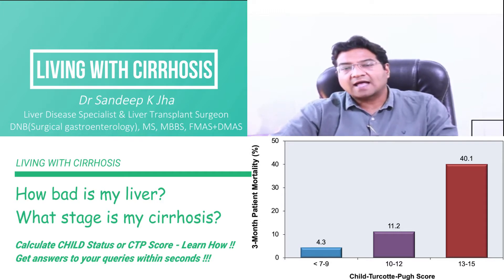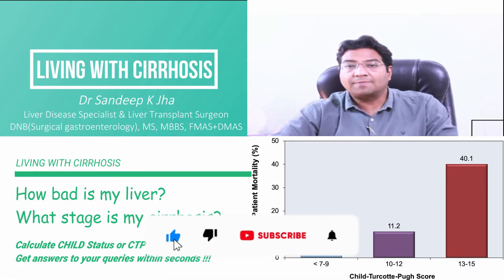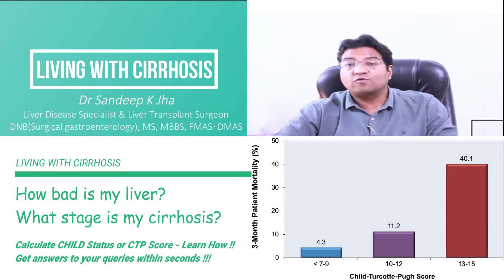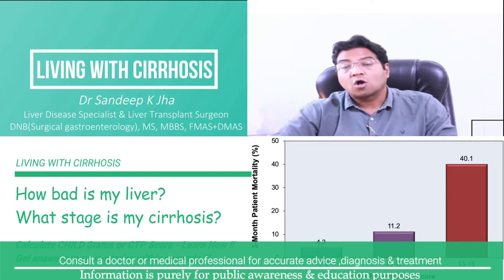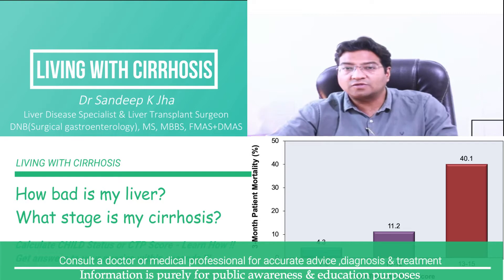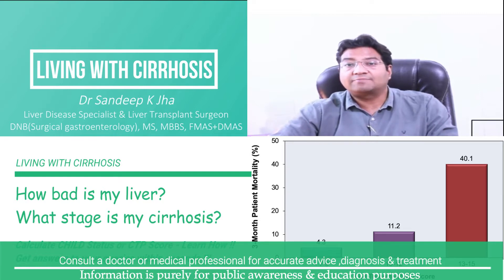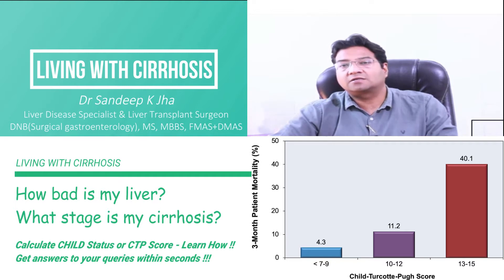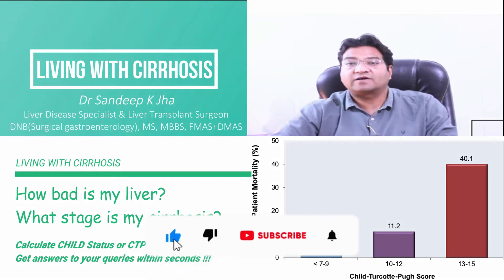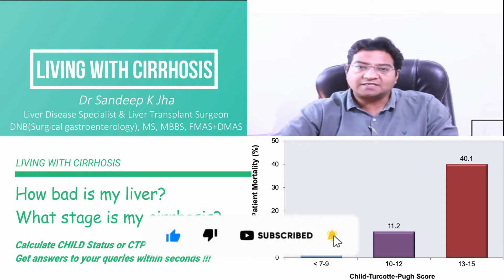However, MELD has its flaws. As you have seen, in the MELD calculator only blood or laboratory parameters are entered. Whereas patients with cirrhosis may have normal blood parameters but sometimes have ascites, or fluid in their abdomen, or they have altered sensorium — an effect on the brain due to liver failure — which is not well captured by the MELD scoring system. So the Child-Pugh scoring system has its benefits, and we will go online to see how to calculate the Child-Pugh stage of cirrhosis and the mortality risk.